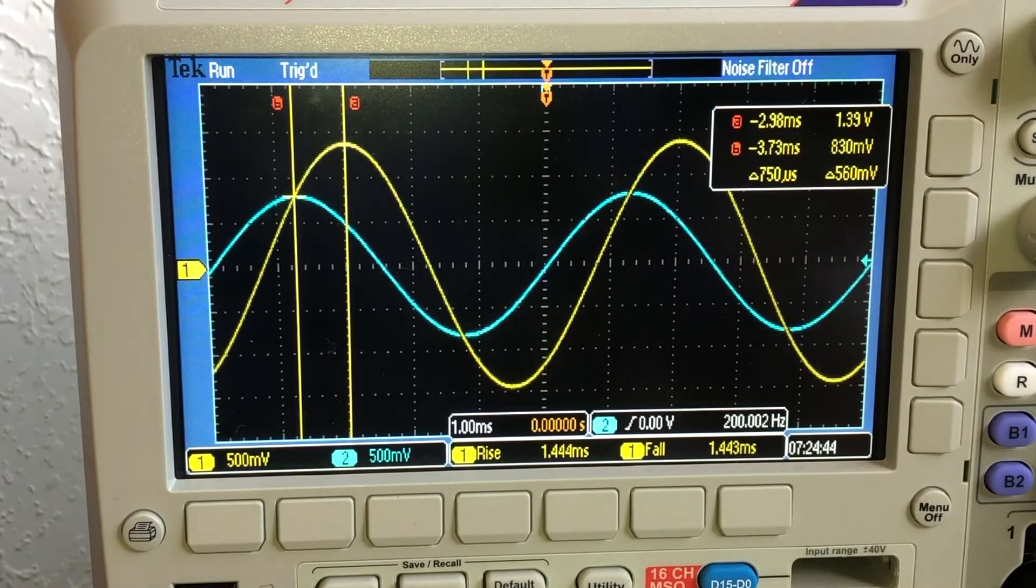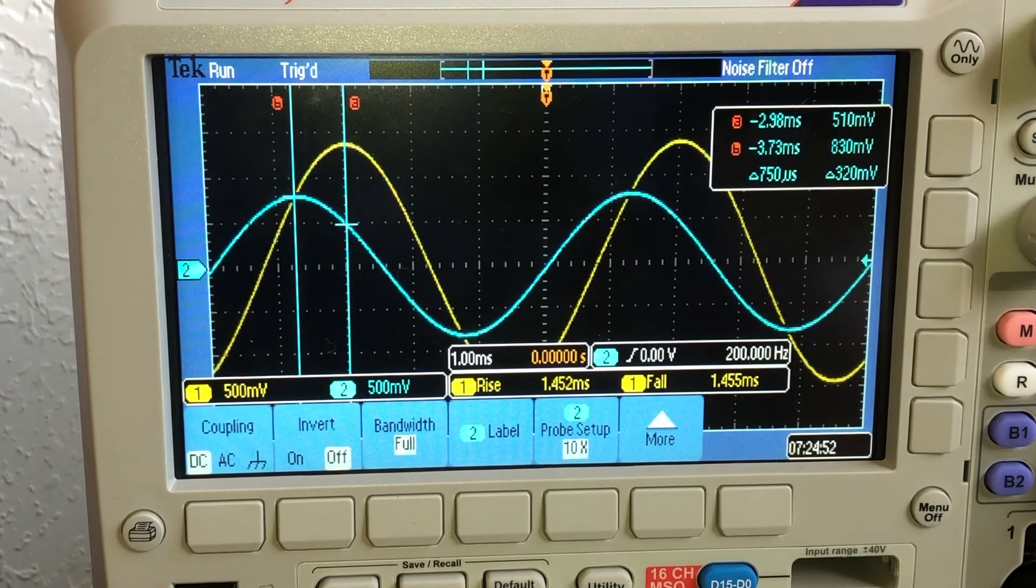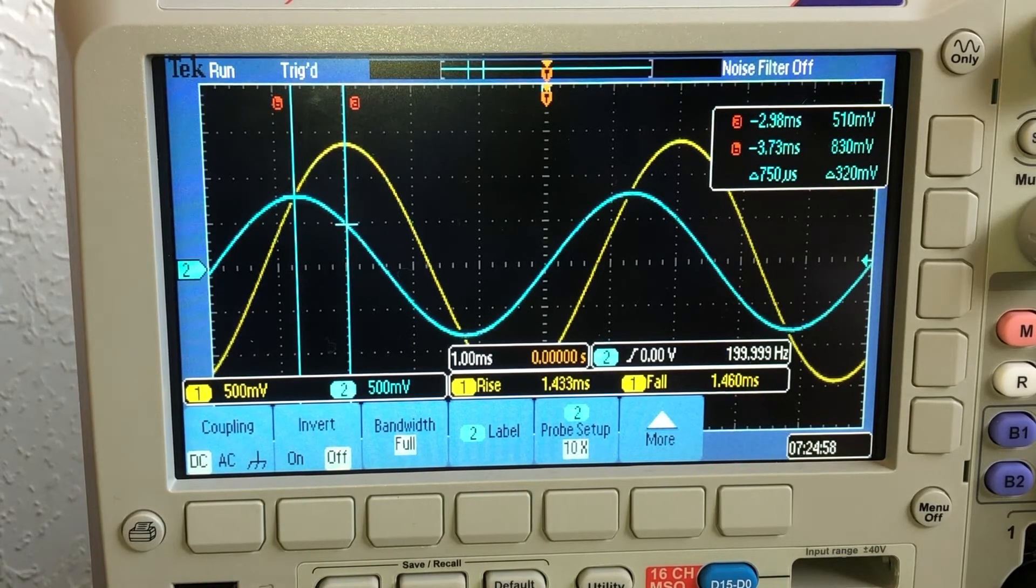We're now at 200 Hz, and the voltage across all three is 1.41 volts, and we have 830 millivolts across the resistor, and next we'll go up to 500 Hz.